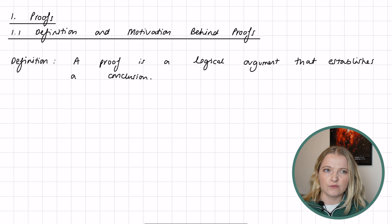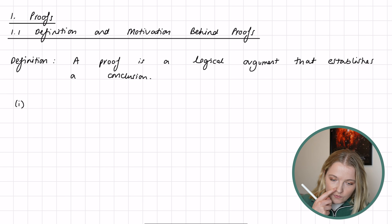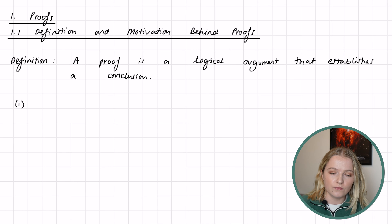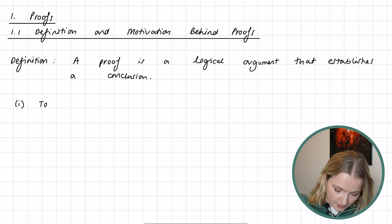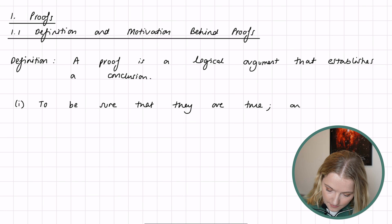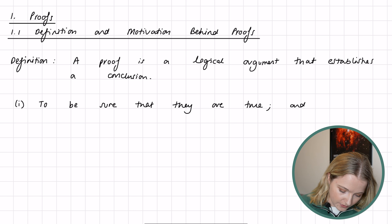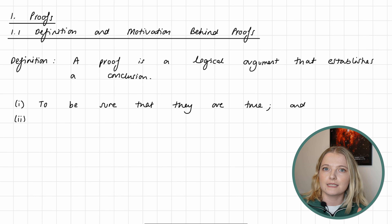The next question is: why do we want to do this? What's the purpose of it? There are two main reasons why we want to prove things in the first place. The first is that we want to be sure that they are true. If we say there are infinitely many prime numbers, or that the sky is blue, we want to be sure that what we are saying is true.